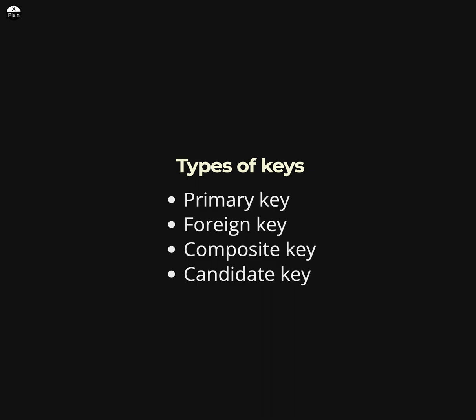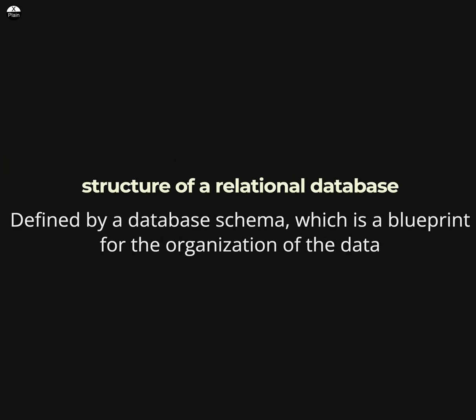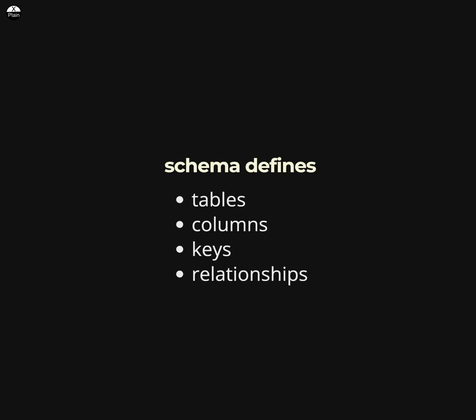The structure of a relational database is defined by a database schema, which is a blueprint for the organization of the data. The schema defines the tables, columns, keys, and relationships between the tables in the database.